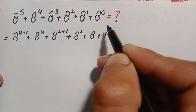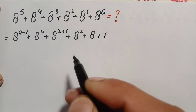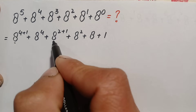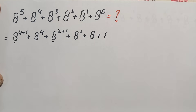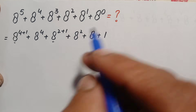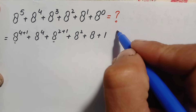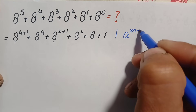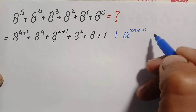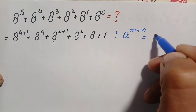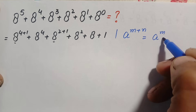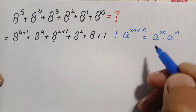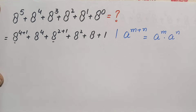Now here in these two terms we will use the exponential identity: a raised to power m plus n. We will use this identity in the first and the third term. The identity states that a raised to power m plus n can also be written as a raised to power m times a raised to power n. Using this exponential identity, this term will become...